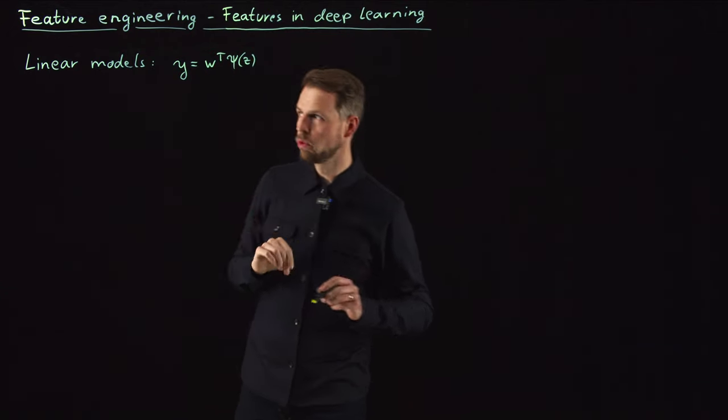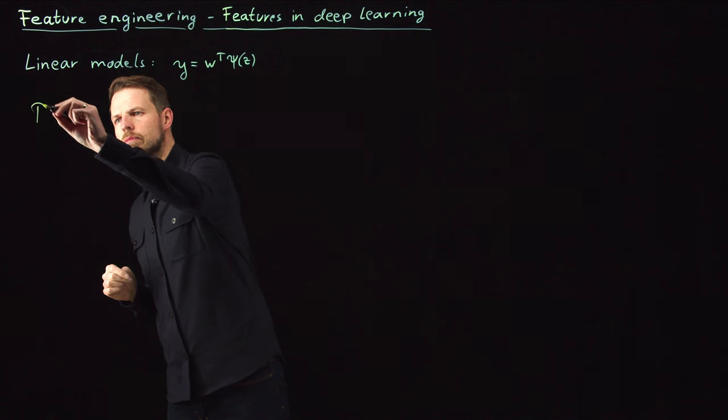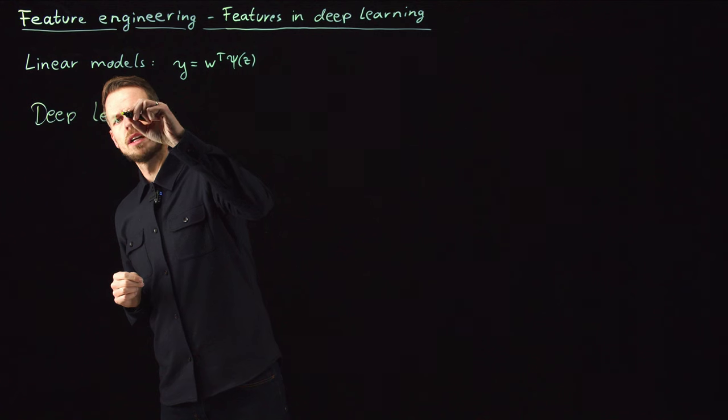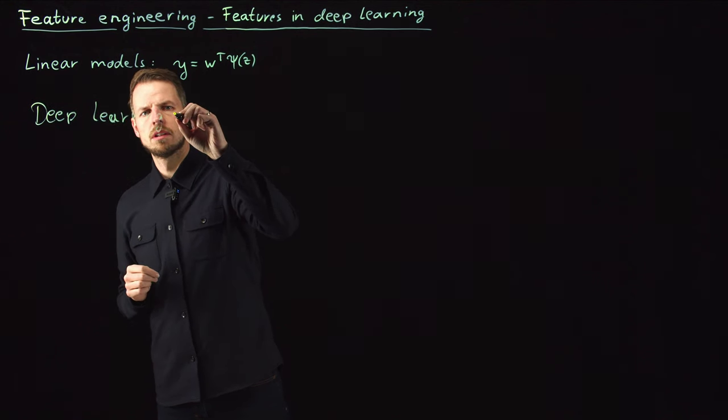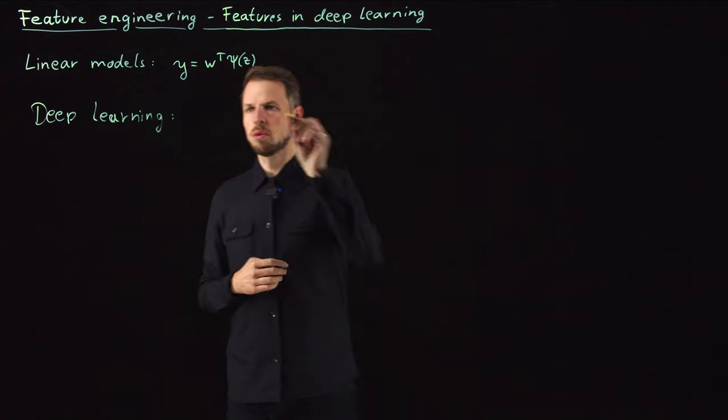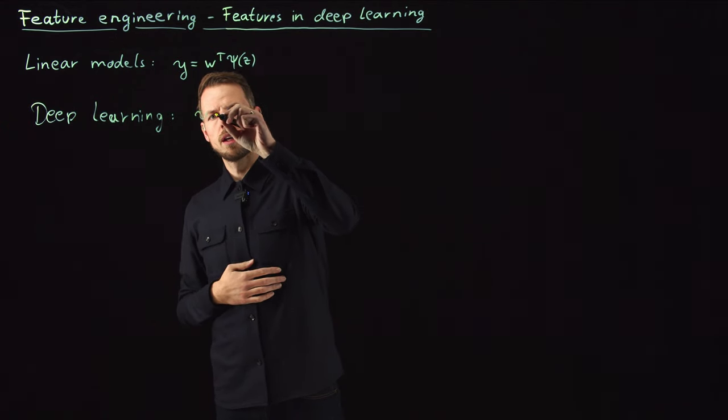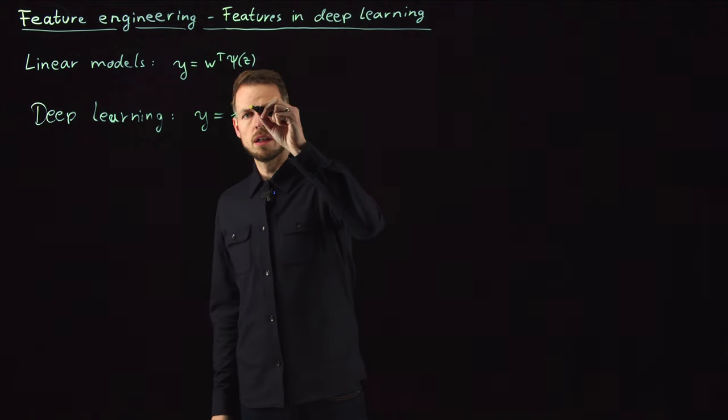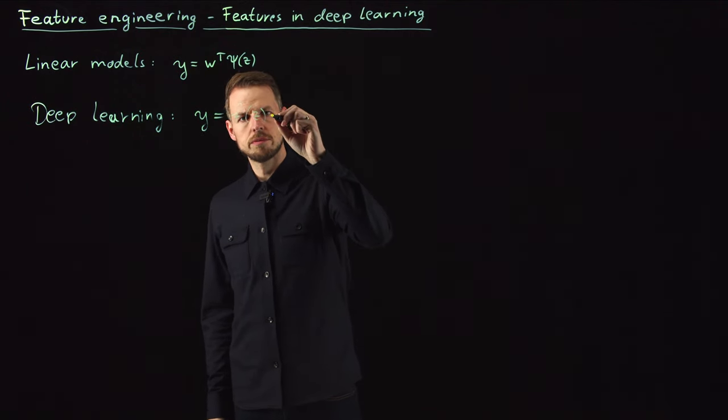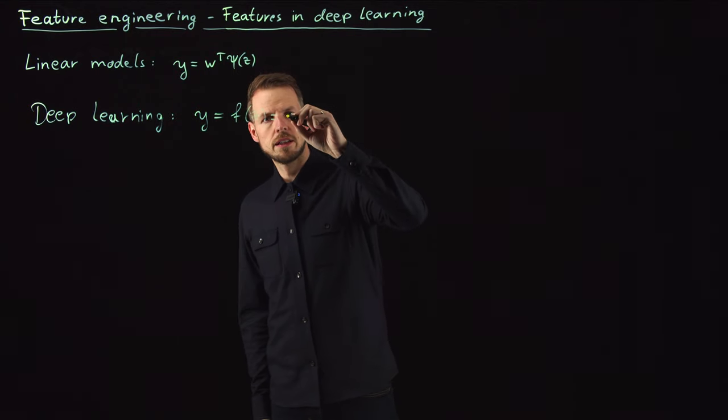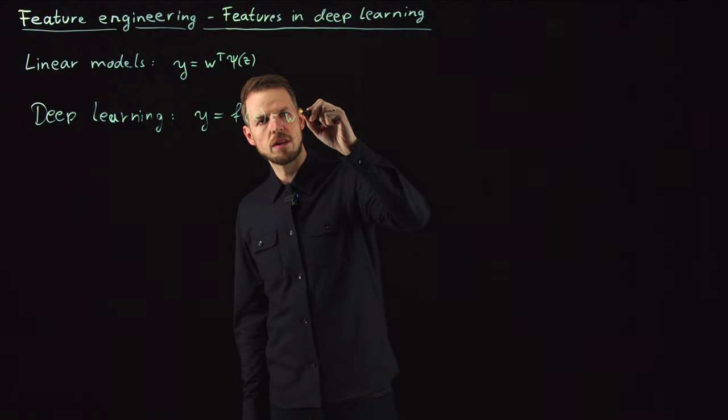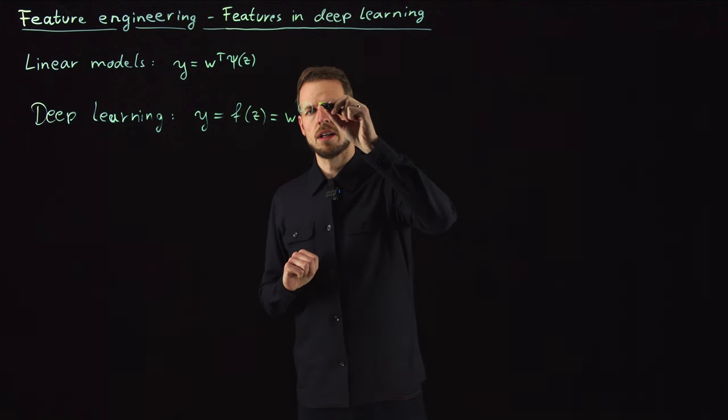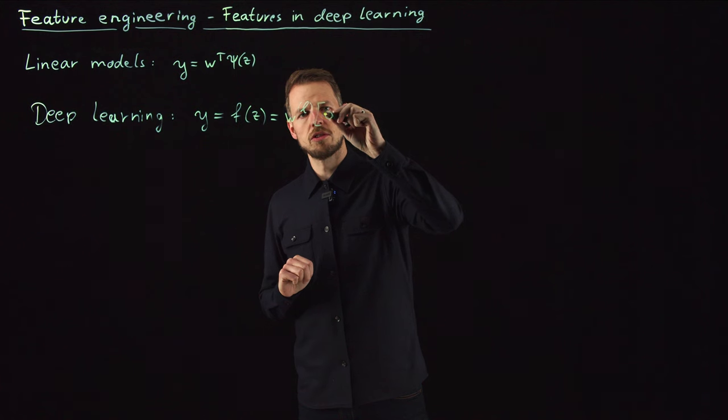So if we compare this to deep learning, we have a completely different perspective. Our output is some neural network function of our input, and this looks usually like this. We have a layer, so this is the Lth weight, times some activation function sigma.